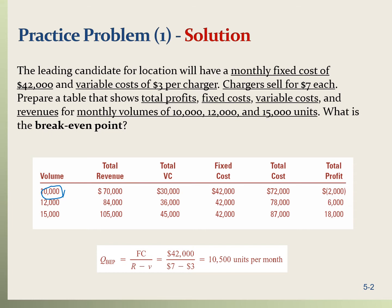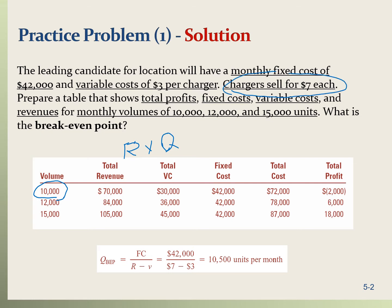The total revenue formula is R multiplied by Q, where R is revenue per unit and Q is the quantity. The revenue per charger is $7. So for 10,000 units, the revenue would be 7 multiplied by 10,000, which is $70,000.